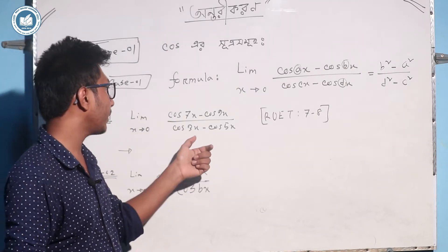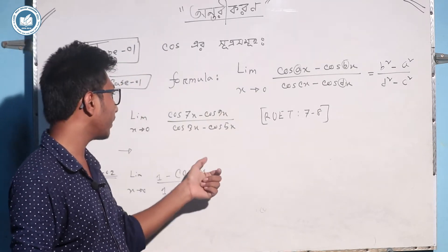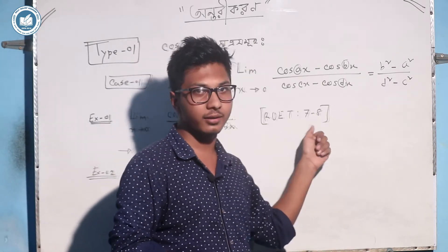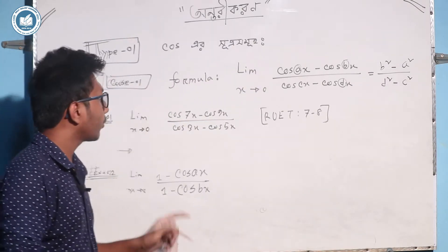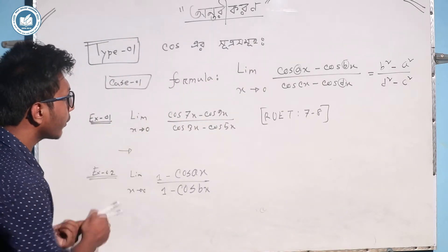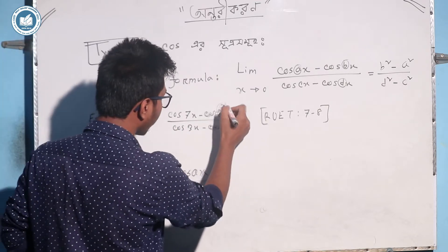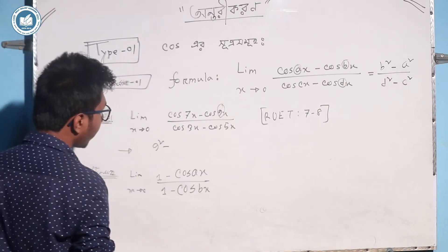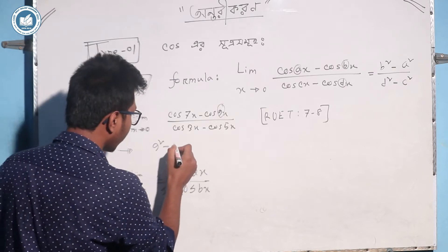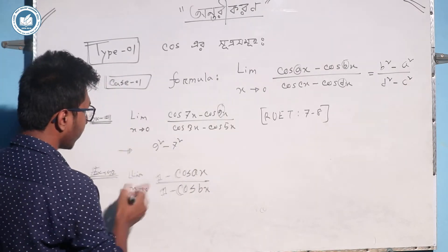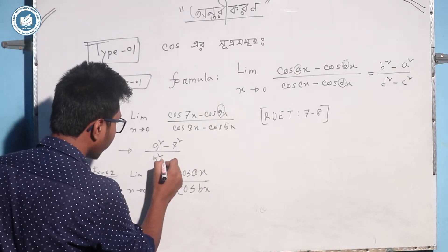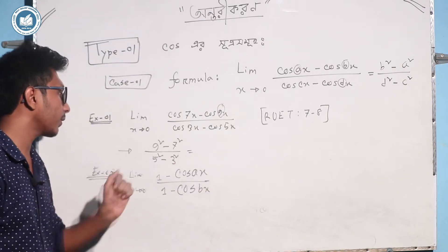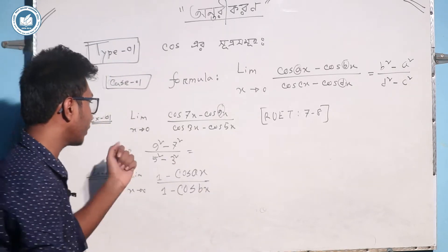Let me show you the math. The limit extends to 0: cos 7x minus cos 9x, divided by cos 3x minus cos 5x. This math is related. We use the formula: this gives 9 squared minus 7 squared, by 5 squared minus 3 squared.